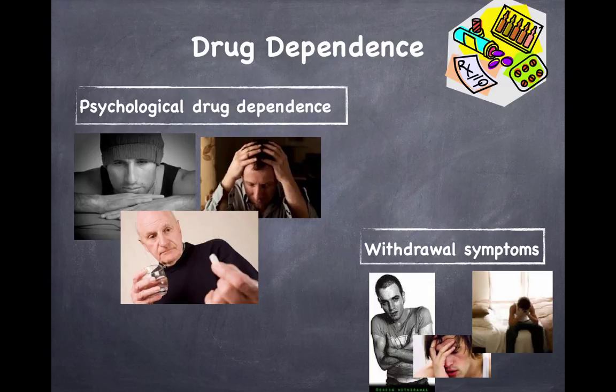A drug may not be physically addictive but can still cause psychological dependence. For example, a person who has overcome their physical need for a drug may leave a neighborhood to get help, but returning to that old neighborhood — places where they used the drug — makes it very difficult not to use again. Meeting up with old friends who offer the drug creates a psychological dependence on the friendship and camaraderie that can be more difficult to break than the actual physical dependency.